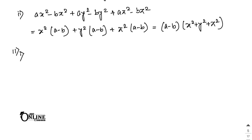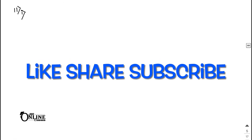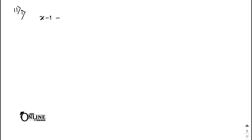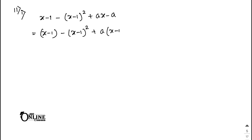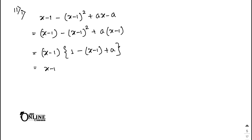Sum 11 is the last sum in this video. Please like, share, and subscribe. Sum 11.1: (x - 1) - (x - 1)² + a(x - 1). Each term has factor (x - 1). Common (x - 1) gives: the first term is 1, the second term gives minus(x - 1), and the third gives plus a. So the answer is (x - 1)(1 - (x - 1) + a) = (x - 1)(2 - x + a).